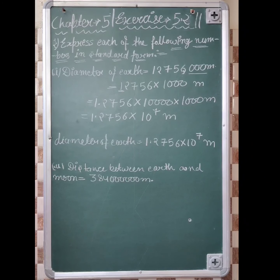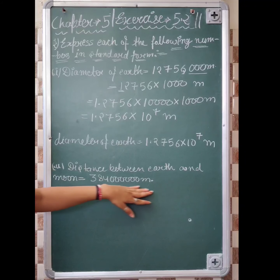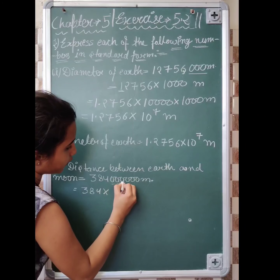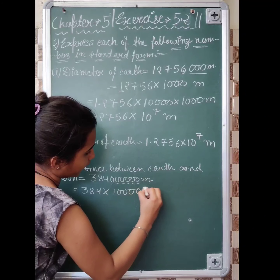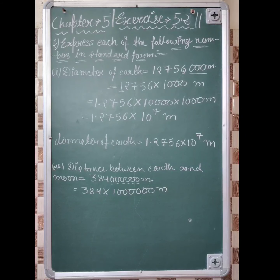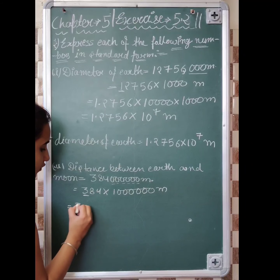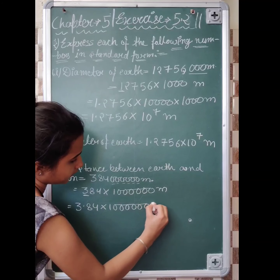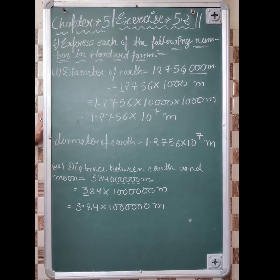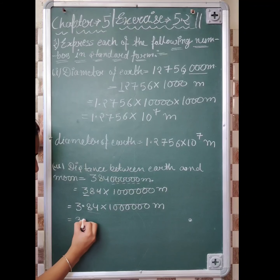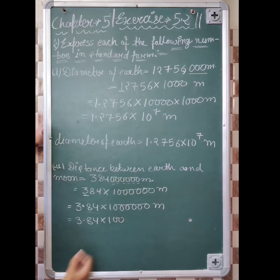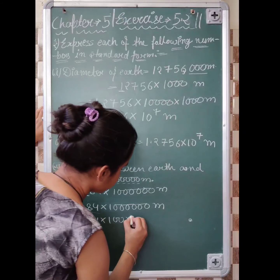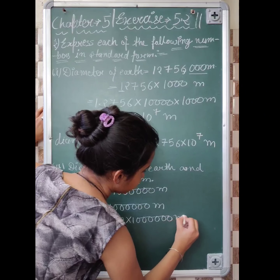Next, distance between Earth and Moon. You can see the distance between Earth and Moon is 3, 8, 4, 0, 0, 0, 0, 0, 0 given. That means 1, 2, 3, 4, 5, 6 meters.